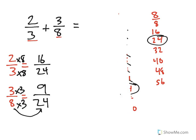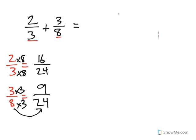Now we have two equivalent fractions, which means these fractions are actually the exact same as 2/3 and 3/8. We're just using different numbers to represent them.